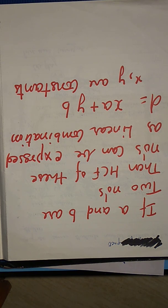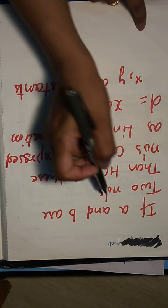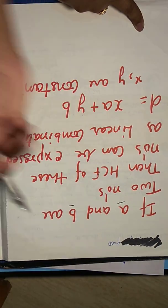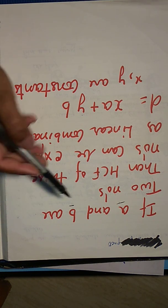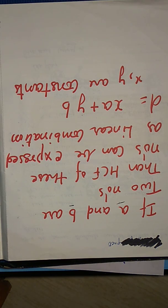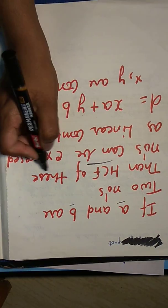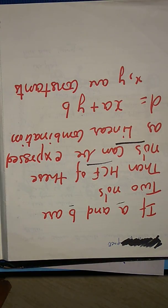In this module we are going to learn a new concept related to HCF. Now what is that new concept? If you have two numbers A and B, A and B can be any two numbers. If you have two numbers A and B, then the HCF of these two numbers, we will find the HCF.